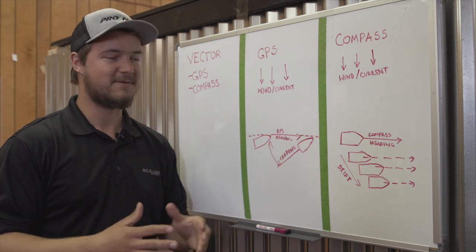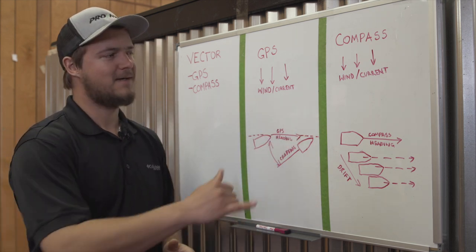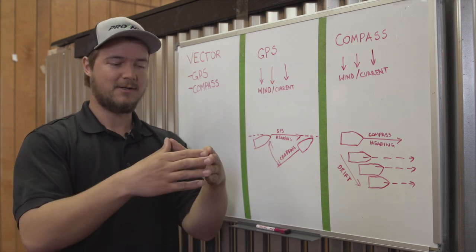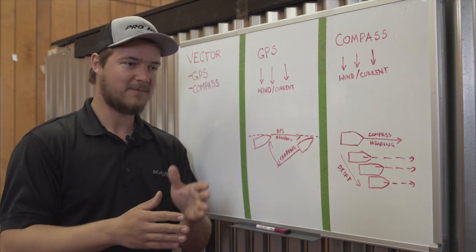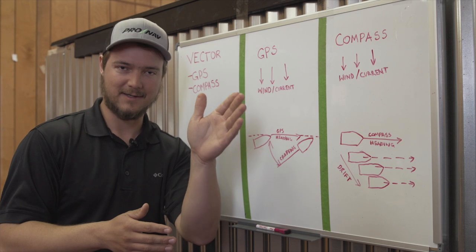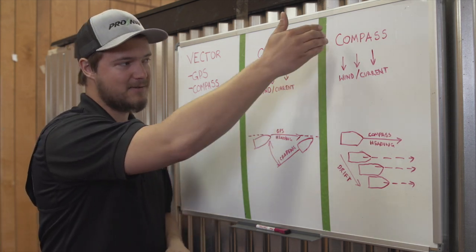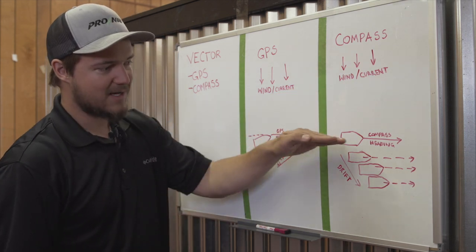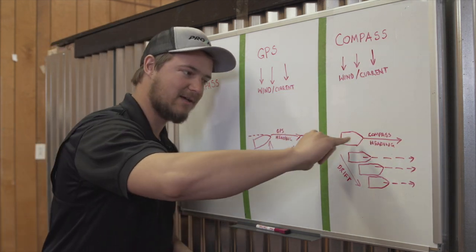Now let's cover the basics of a compass heading lock. A compass heading lock uses a compass to basically point the motor at a constant heading, a compass heading. So as you can see here in the same example, we've got wind, waves, current. We set a compass heading lock as our boat is heading along this heading.